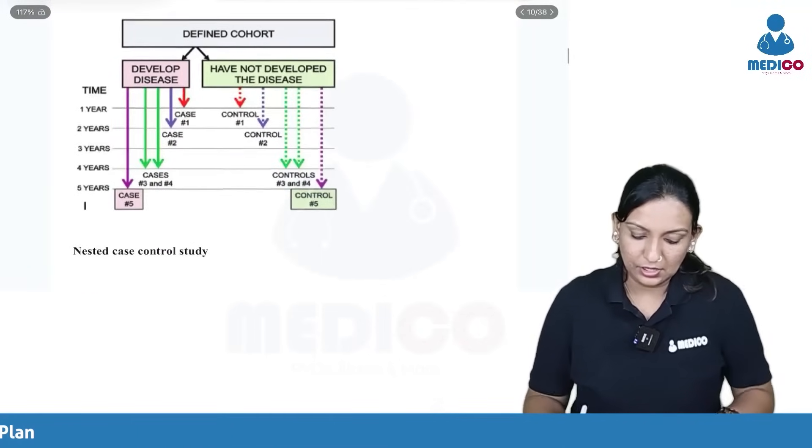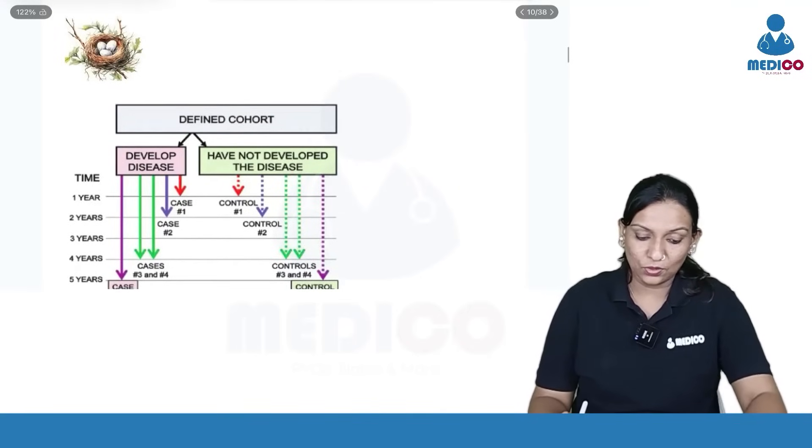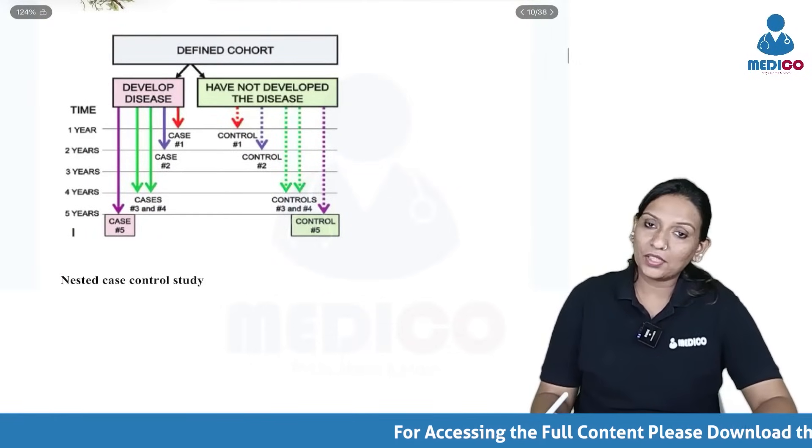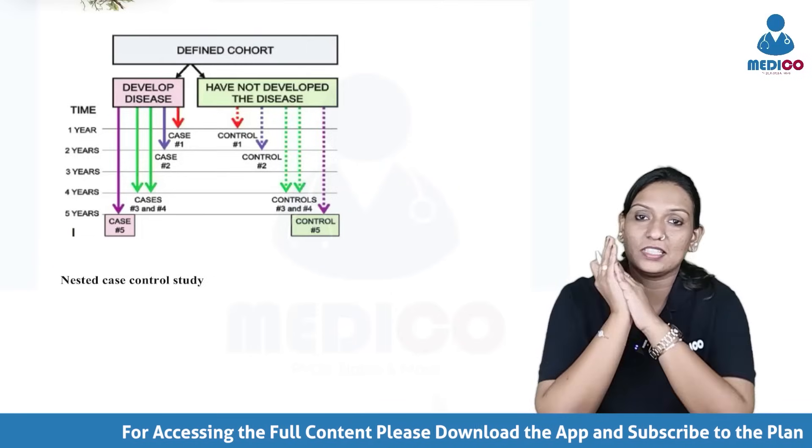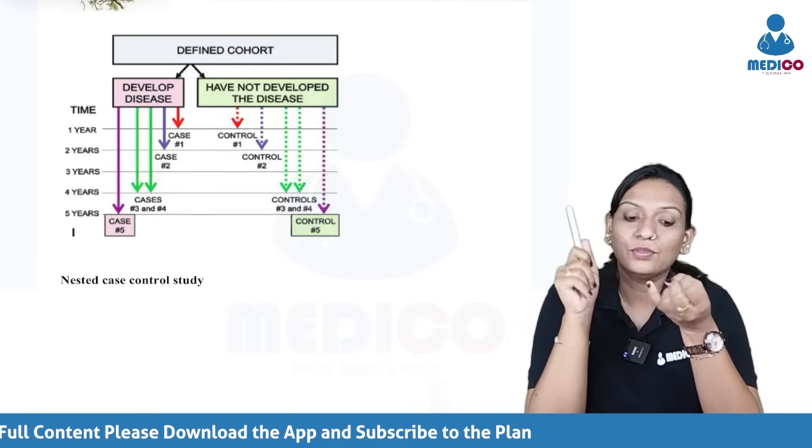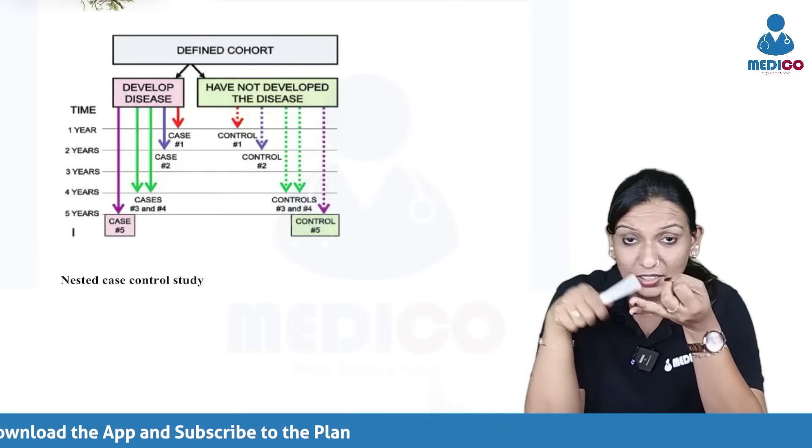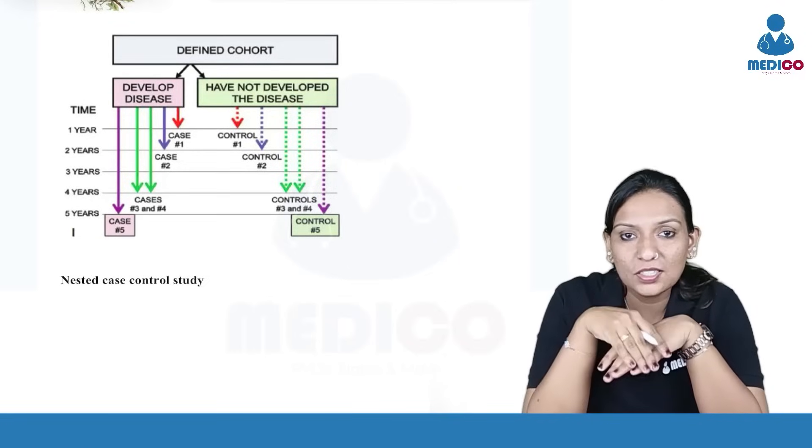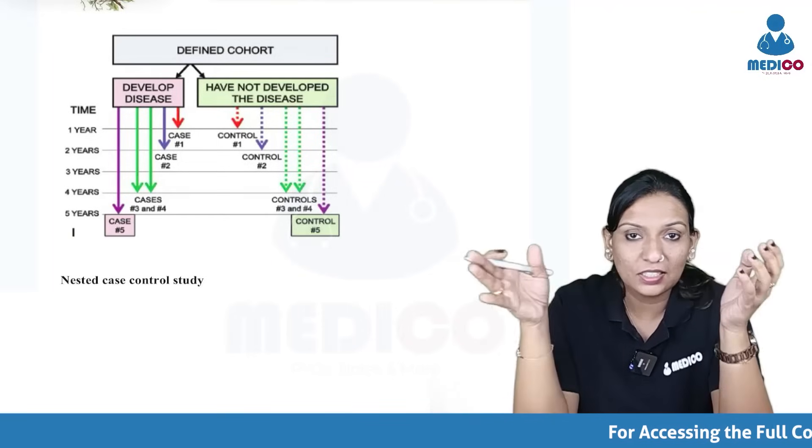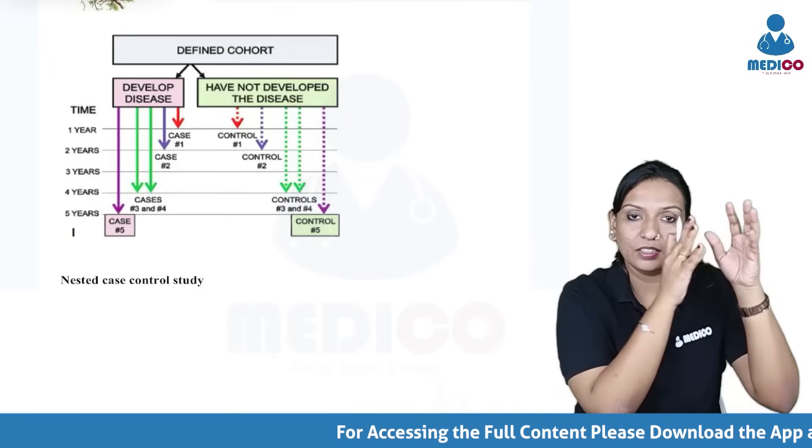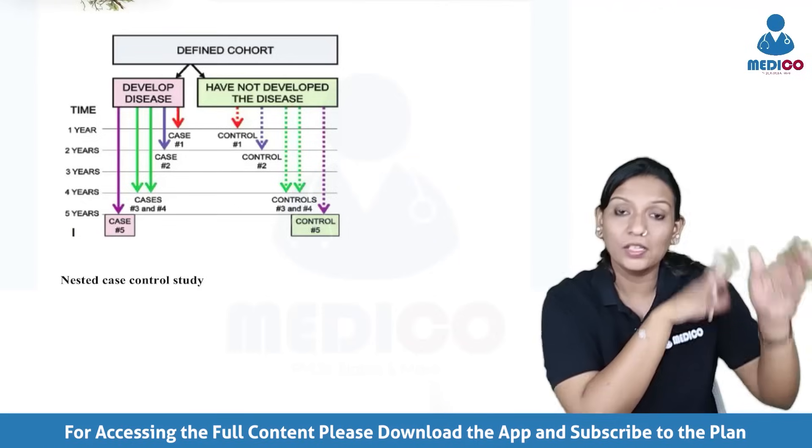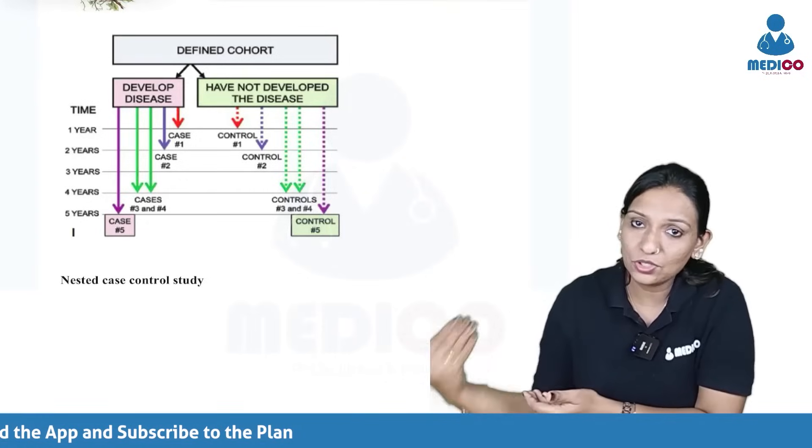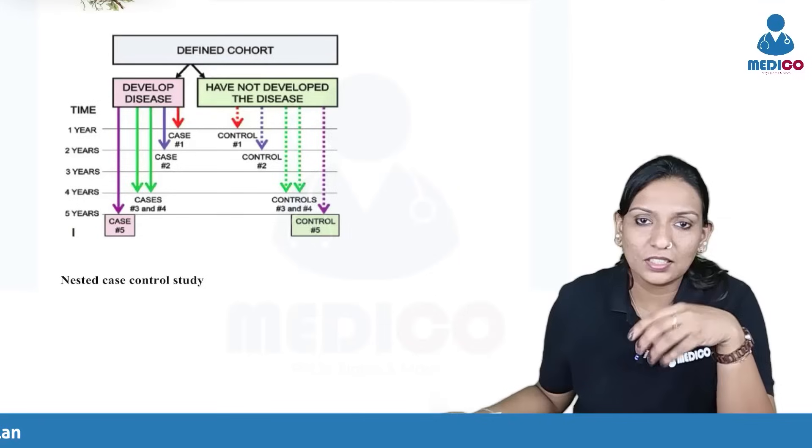Now we will move on to the next question. What do you see here? This is a nested case control study. We know about case control studies, cohort studies, cross-sectional studies, everything. Now we have two different study designs. One is the nested case control study. Another one is the case cohort study. These are actually studies embedded within a cohort. Cohort study is a very expensive longitudinal study which takes years to happen. So why not do a smaller study in between this time?